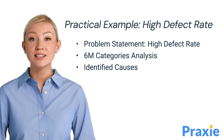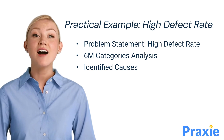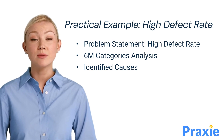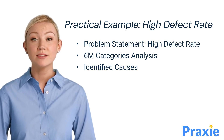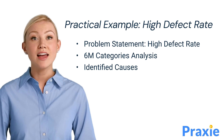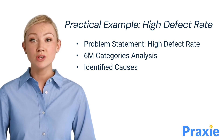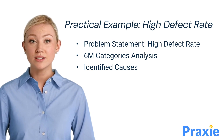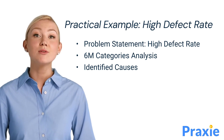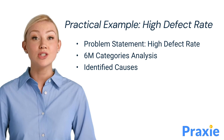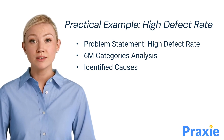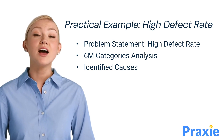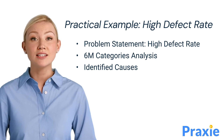Let's look at a practical example. Suppose we have a high defect rate in a production line. We would start with the problem statement: high defect rate. Then, we use the 6Ms to analyze possible causes. For instance, under man, we might find inadequate training. Under machine, perhaps we have outdated equipment. This method helps in categorizing and visualizing the potential causes effectively.